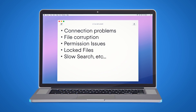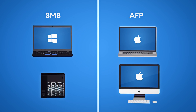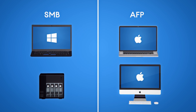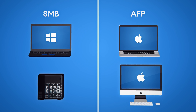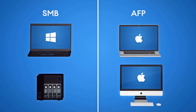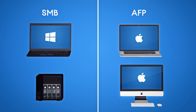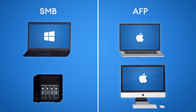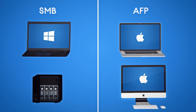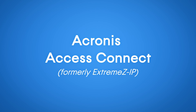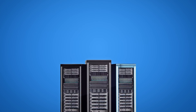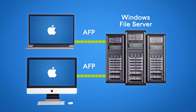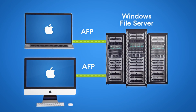Why? Because Windows and NAS servers use the Server Messaging Block, or SMB Network Protocol, rather than the Apple Filing Protocol. But now there's a simple way to eliminate compatibility problems once and for all: Acronis Access Connect. Install it on a Windows Server and let Macs easily connect over AFP.